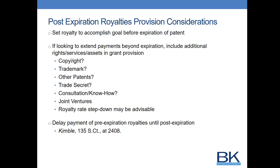Of course, the simplest option is to set the royalty rate high enough to collect the target amount before the patent expires. However, that is often not feasible, which is why the other options exist to work within the Brulotte/Kimball rule while still achieving the desired royalty outcome.